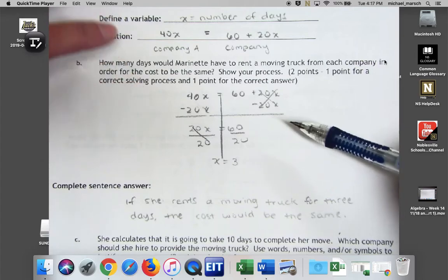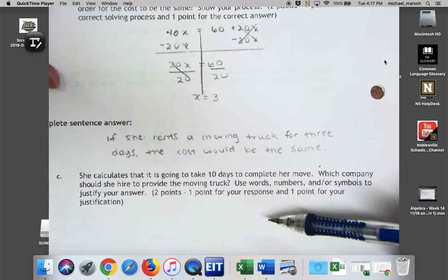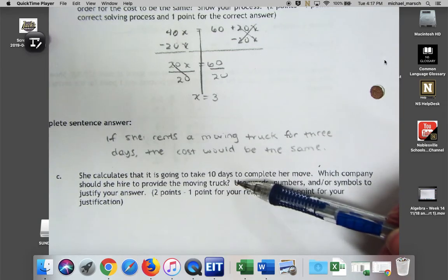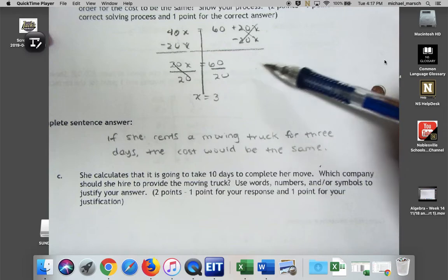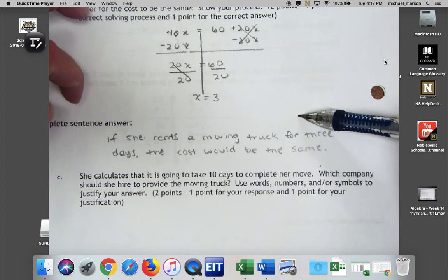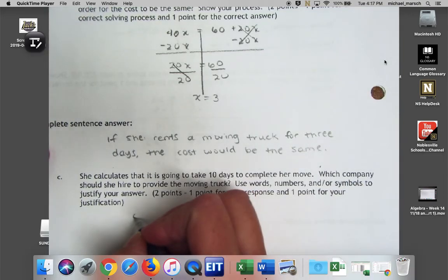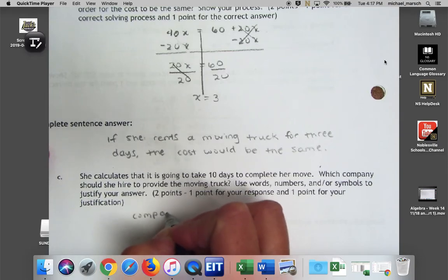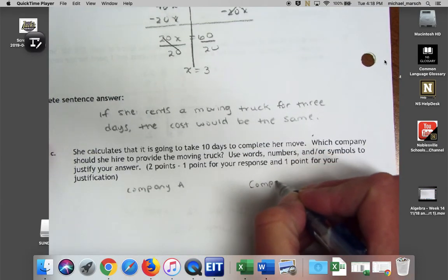Right, so some of you might be able to take that logic and go down here and say, well, if she needs it for ten days, of course I'm going to use Company B because now I'm only charged $20 each day for seven days instead of $40 each day for seven days. Some of us aren't ready to use that logic yet, so what we can do instead is actually figure out how much it will cost for ten days.